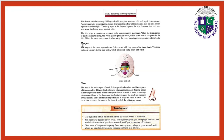The skin helps to maintain a constant body temperature in mammals. When the temperature of the body starts rising, the sweat glands produce sweat which comes out of the pores in the skin. When the sweat evaporates, it takes away heat, lowering the temperature of the body.